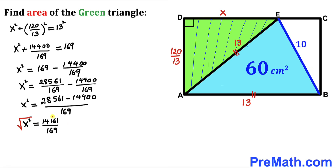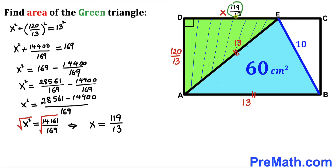Taking the square root of both sides, x = 119/13. So DE = 119/13 cm.